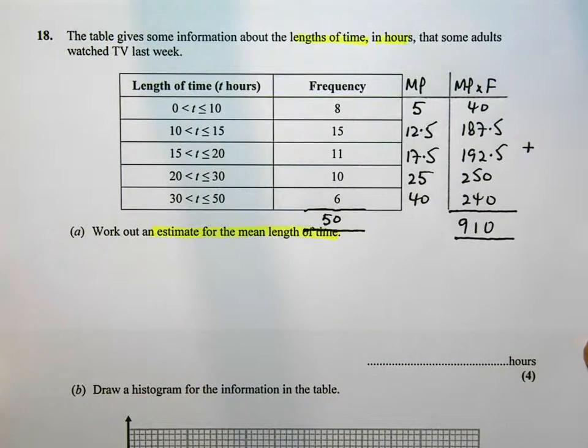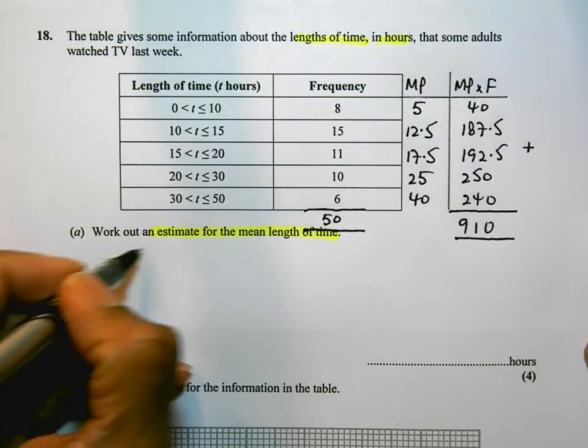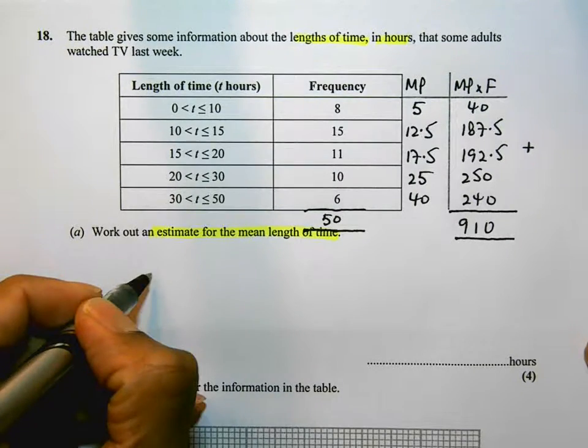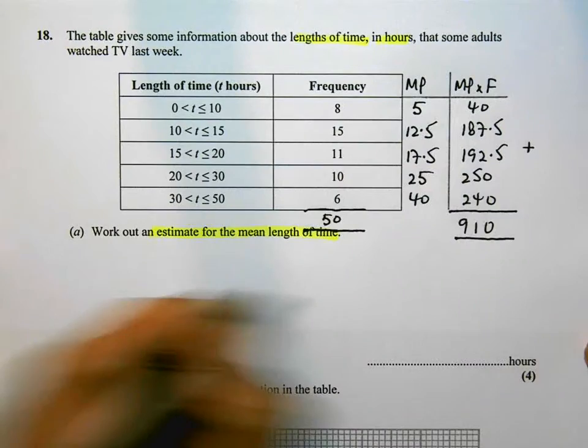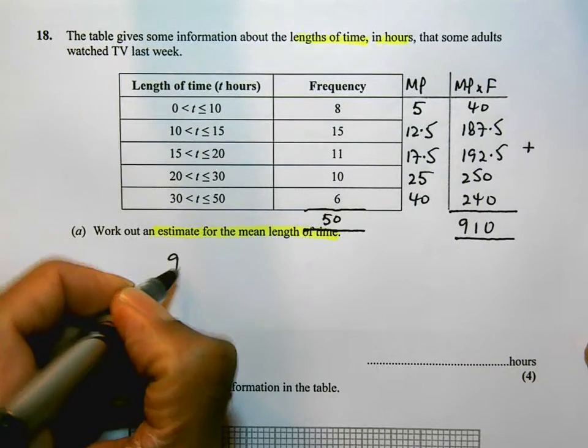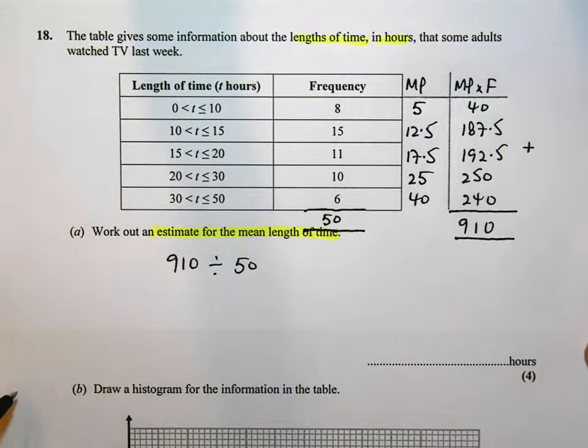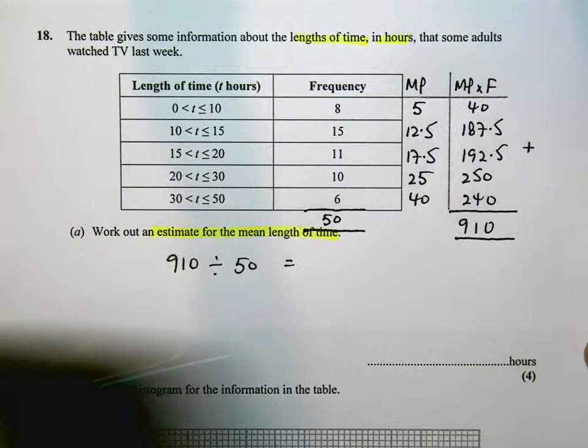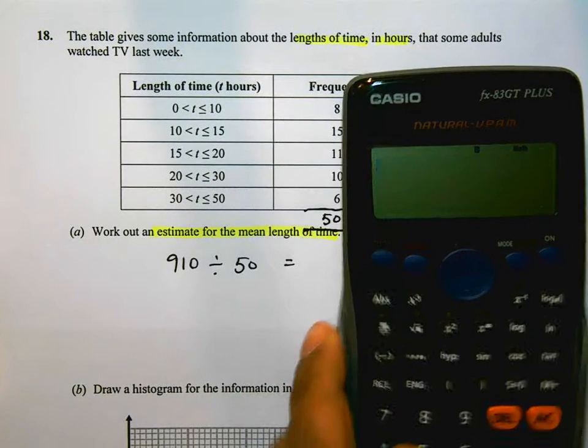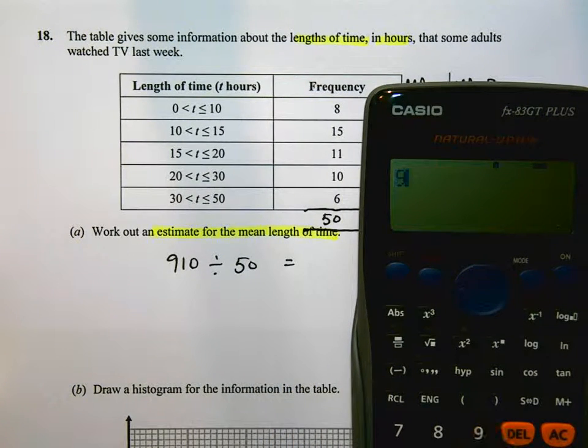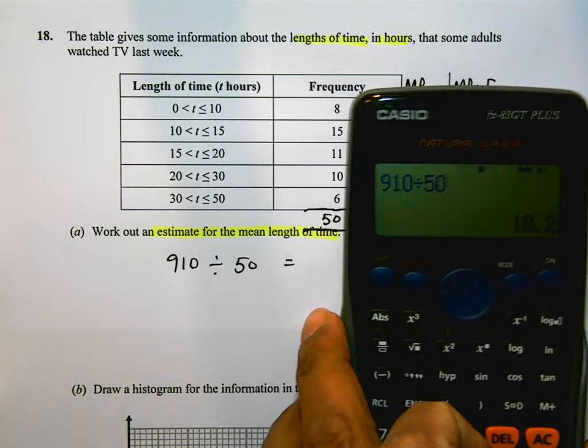So to work out the estimated mean, I'm going to do the total of the midpoint times the frequency, divide that by the total frequency. There are 50 people altogether, and that's going to be an estimate of the mean time. So that's 910 divided by 50, 18.2. That's what I should put in my answer space. And that's the answer to part A.